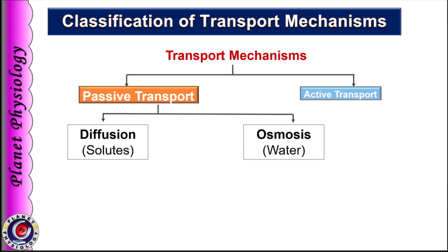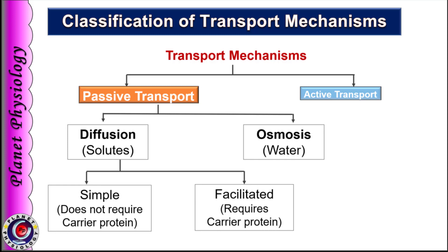Diffusion can be further divided into two: simple and facilitated. Simple diffusion does not require the help of any carrier protein. For facilitated diffusion, a carrier protein is required. So diffusion with the help of a carrier protein is called facilitated diffusion or carrier-mediated diffusion.